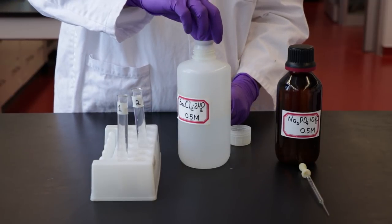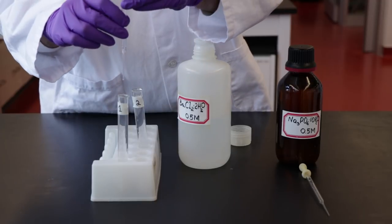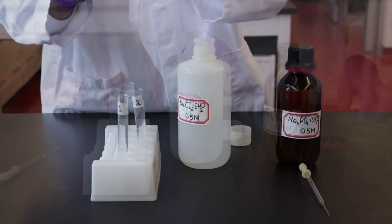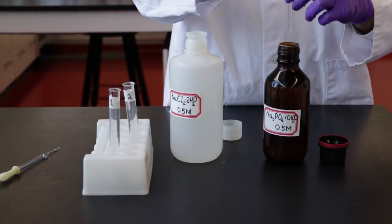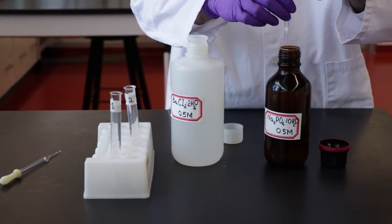Add two drops of 0.5 molar barium chloride into test tube one. Then add two drops of 0.5 molar sodium phosphate into test tube two.